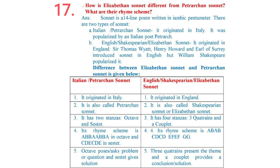Differences: 1. Petrarchan sonnet originated in Italy; Elizabethan sonnet originated in England. 2. Petrarchan sonnet is also called Italian sonnet, whereas Elizabethan sonnet is also called Shakespearean or English sonnet. 3. Petrarchan sonnet has two stanzas — Octave and Sestet; Elizabethan sonnet has three quatrains and a couplet. 4. The rhyme scheme of Petrarchan sonnet is ABBAABBA in the Octave and CDECDE in the Sestet; the rhyme scheme of Elizabethan sonnet is ABAB CDCD EFEF GG. In Petrarchan sonnet, the Octave raises a problem and the Sestet gives the solution; in Elizabethan sonnet, three quatrains present the theme and the couplet provides the conclusion.